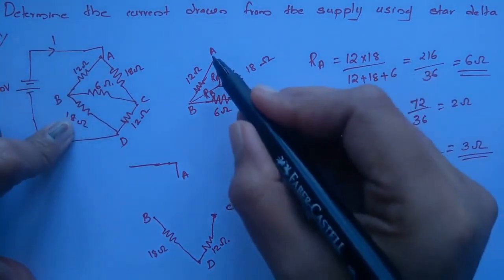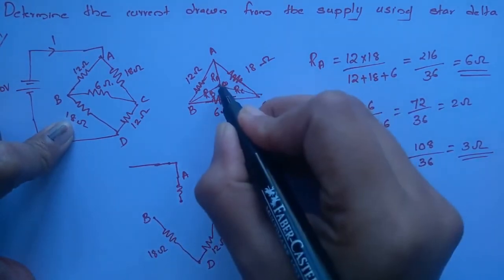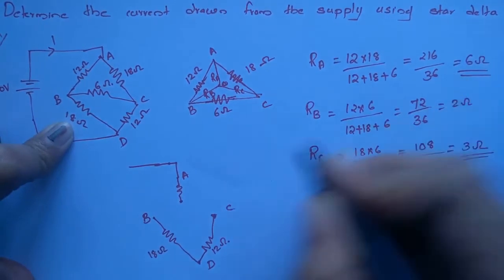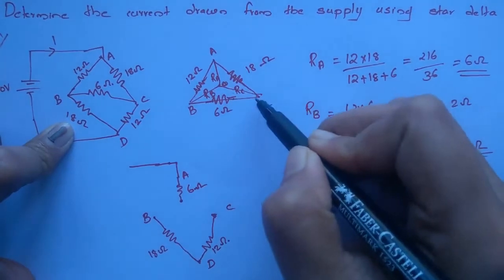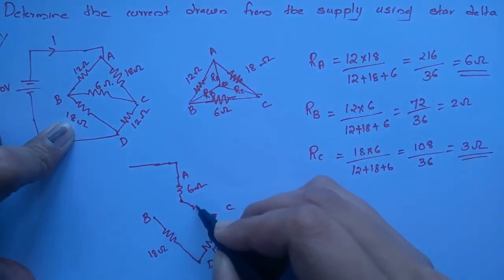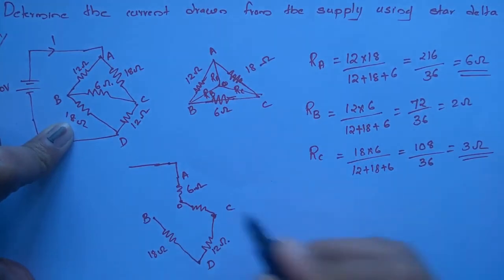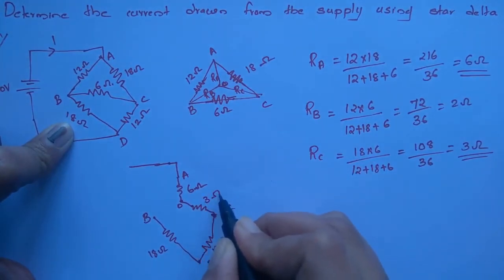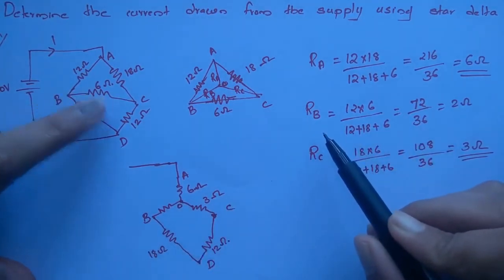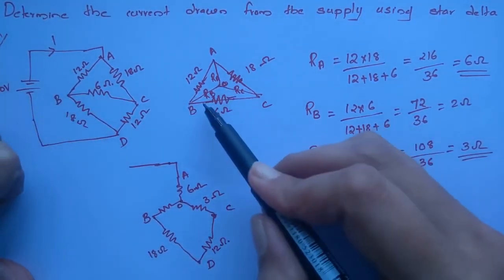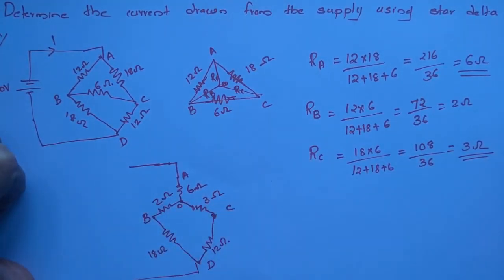Making the connection: from A to O, Ra is 6 ohm; A is 9 ohm. R is 6 ohm. From C to O, the connection gives RC value of 3 ohm. Similarly, from B to O, resistance RB value is 2 ohm.